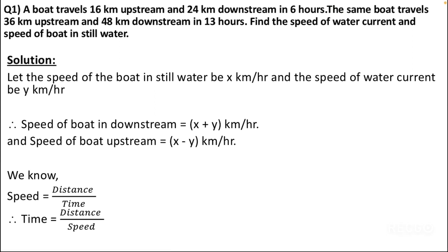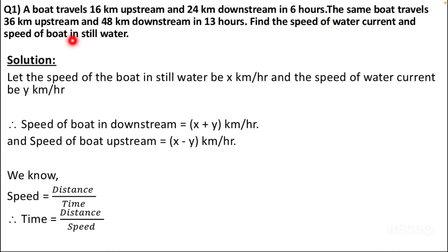We have a question here, so let us first read it. A boat travels 16 kilometers upstream and 24 kilometers downstream in 6 hours. The same boat travels 36 kilometers upstream and 48 kilometers downstream in 13 hours. Find the speed of the water current and the speed of the boat in still water.